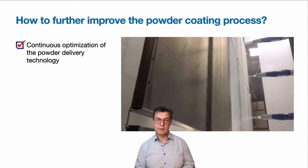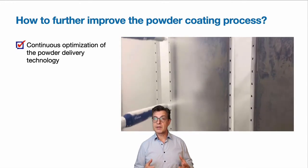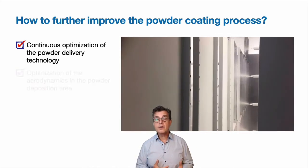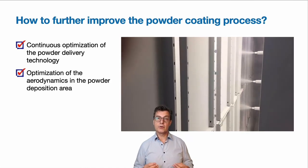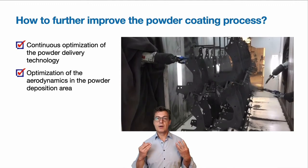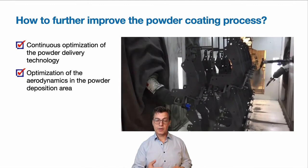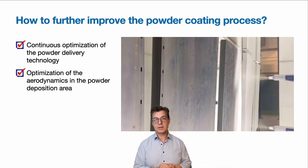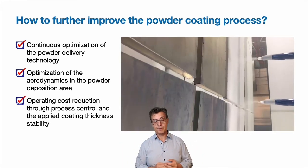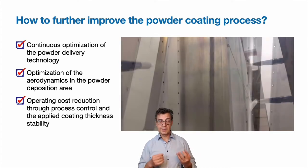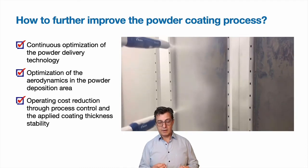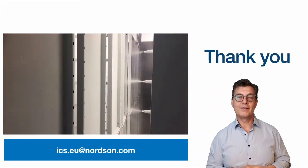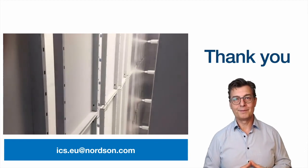Does this mean we are done trying to improve application efficiency and material savings? Not at all. We still have tools at our disposal with the continuous optimization of powder delivery technology and powder pump technology, in a way that allows us to achieve softer spray patterns, bring the powder to the product with low velocity, minimum powder bouncing back, very high application efficiency, and very little airborne powder going into the recycle system. Additionally, significant powder material savings can be achieved through process control and very tight control of applied coating thickness. With this, I thank you for sticking around. If you have any questions, please send me an email and I'll be happy to get back to you.